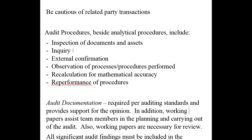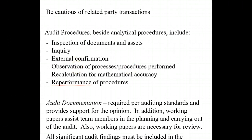External confirmation is also important — particularly for accounts receivable and loan balances, where we actually confirm those balances with outsiders. We observe processes and procedures performed — that's why auditors are sometimes called trained observers. We recalculate to check mathematical accuracy, running client transactions through our software to make sure calculations and extensions are correct. And re-performance of procedures, where we use the client's software with a test bank and run the same procedures the company does.